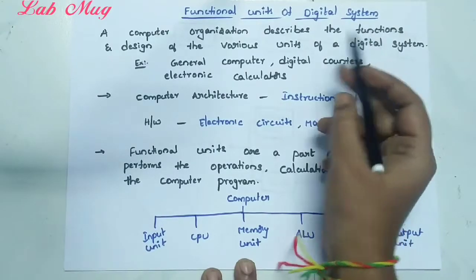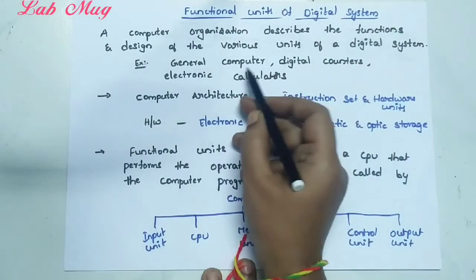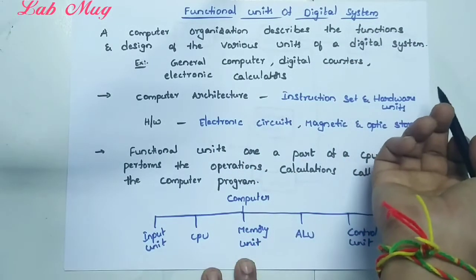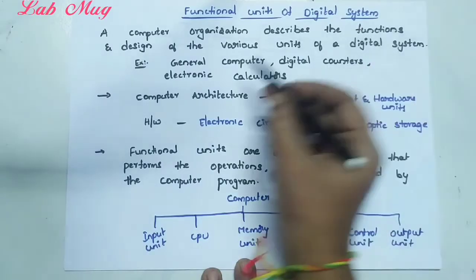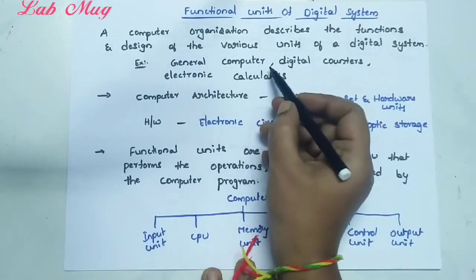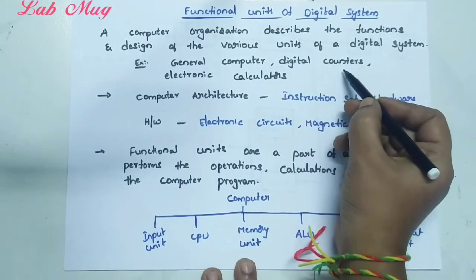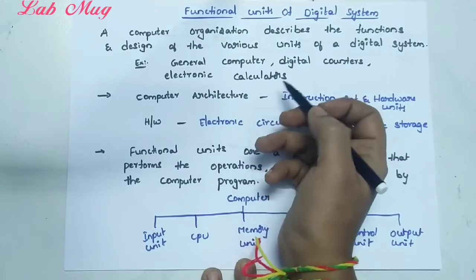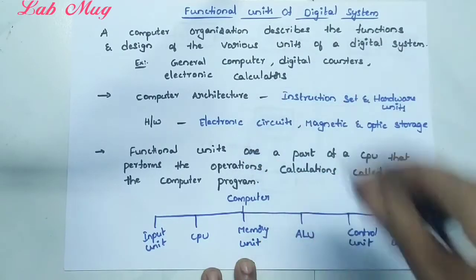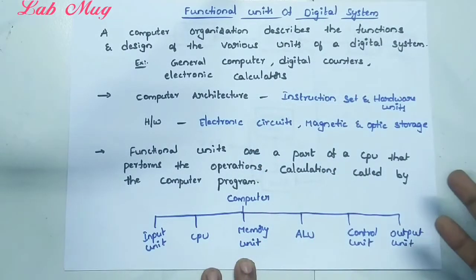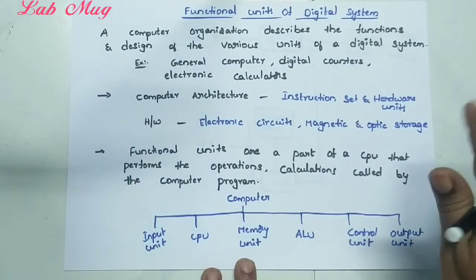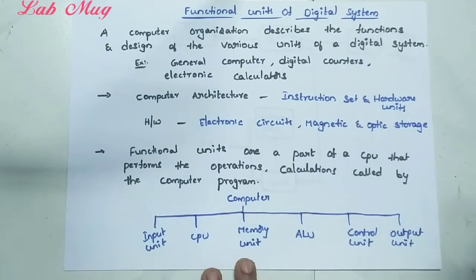Generally, we use digital systems as a normal computer. If you have a personal computer, it is a general computer — that is one digital system. And digital counters, electronic calculators, telephone switching exchanges — these are different digital systems.